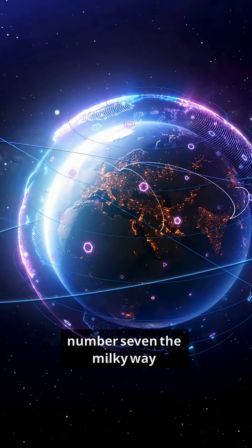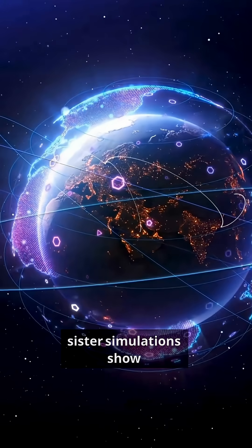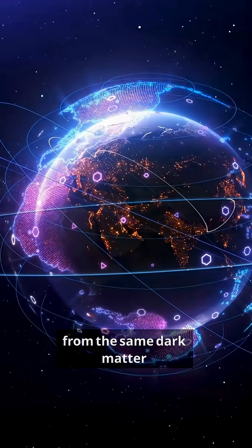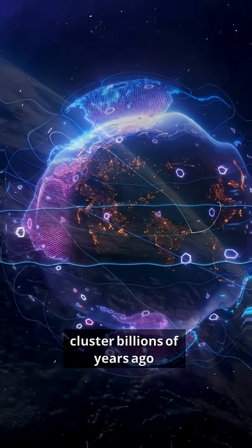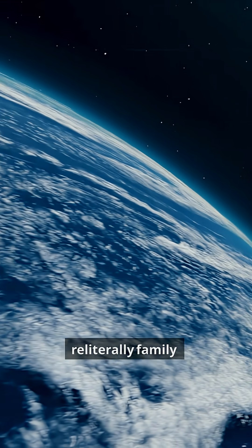Fact number seven, the Milky Way and Andromeda are cosmic sisters. Simulations show both galaxies probably formed from the same dark matter cluster billions of years ago. In other words, they share a cosmic origin. They're literally family.